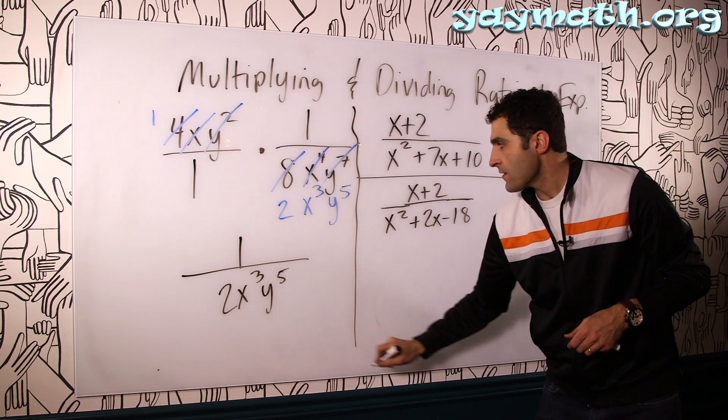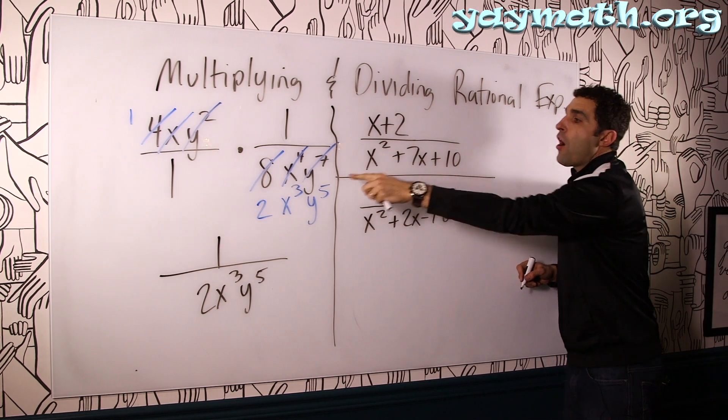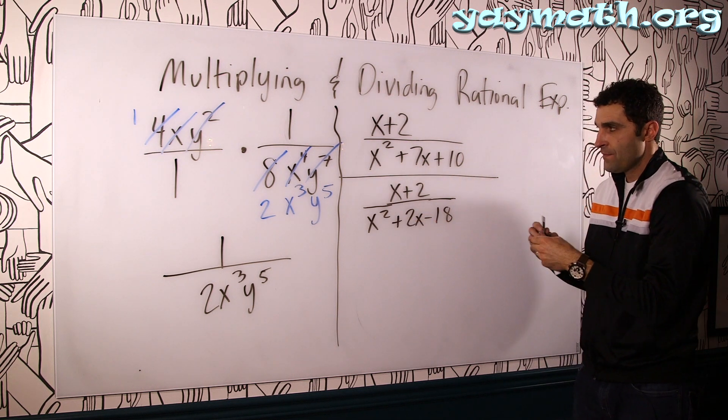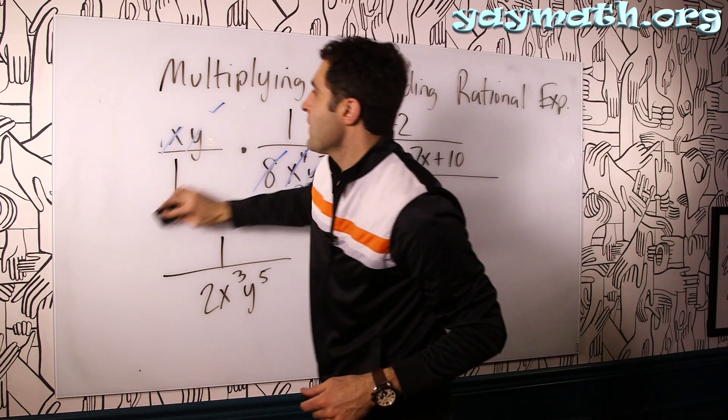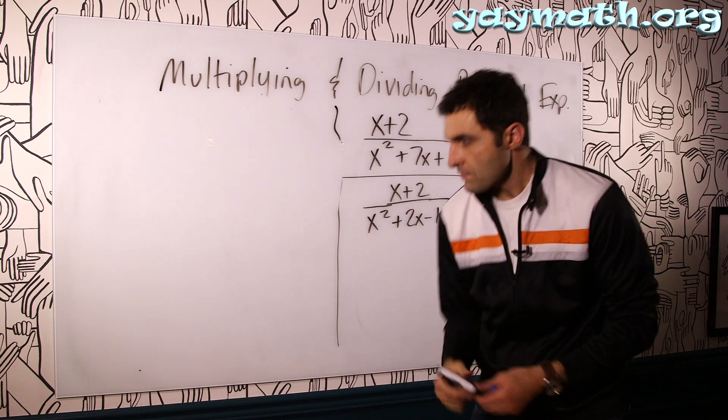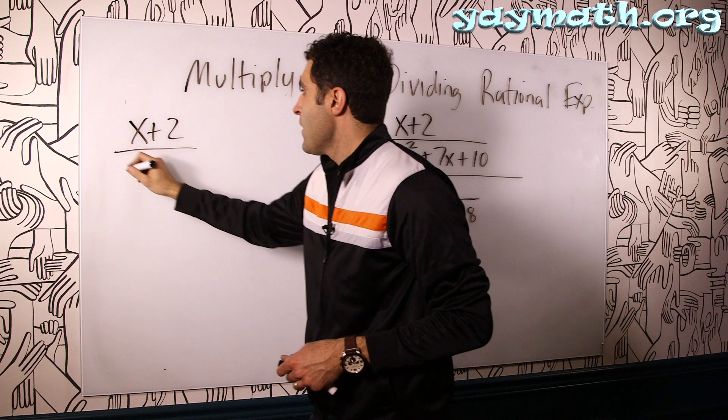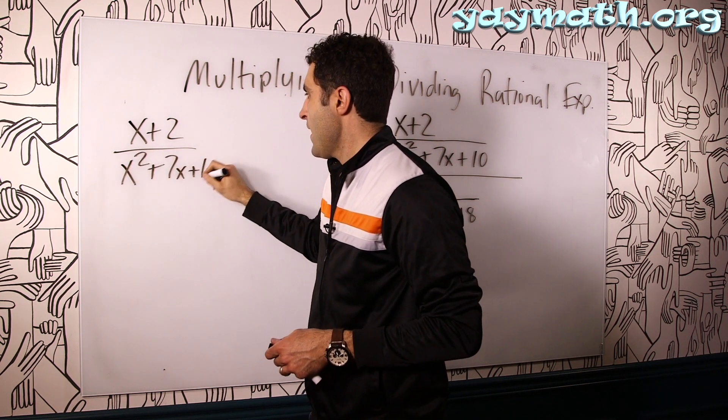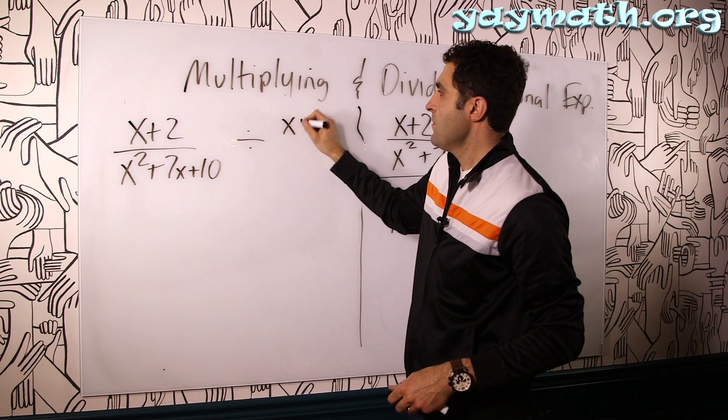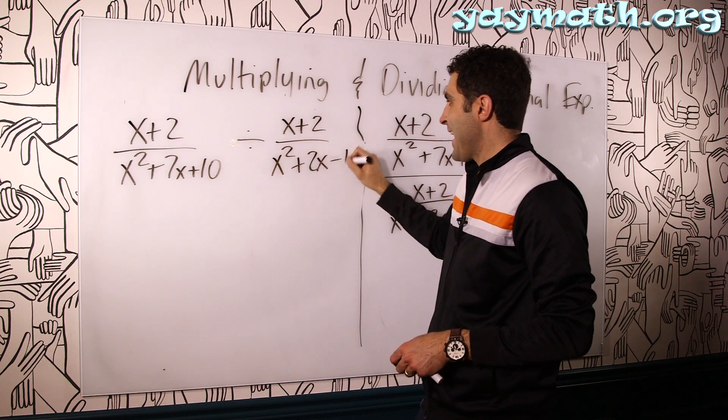Now let's talk about this one. Here we have the fraction X plus 2 over X squared plus 7X plus 10, all divided by X plus 2 divided by X squared plus 2X minus 18. So what we can do is we can think of this in terms of a division, right? Write it as X plus 2 over X squared plus 7X plus 10 divided by this guy, X plus 2, divided by X squared plus 2X minus 18.